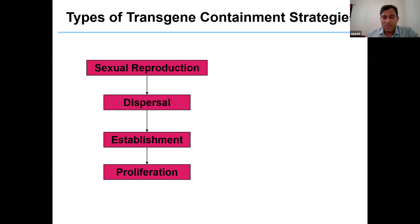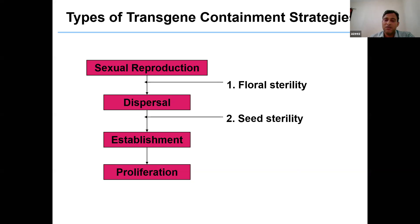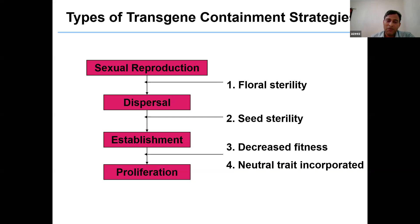What are the strategies of containment technology? There are several steps where we can check gene transfer using biotechnological tools. One can act at the floral level to manipulate the flowering process and generate flowering sterility so these genes don't get transferred to natural systems. Another level is the seed level — manipulate seeds so they don't get dispersed into natural systems. Or you can manipulate the fitness of transgenics so they don't outcompete natural systems.